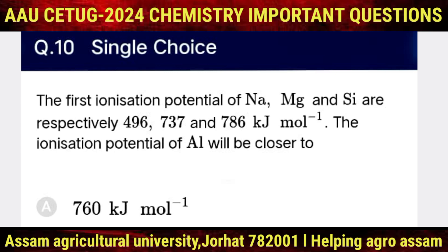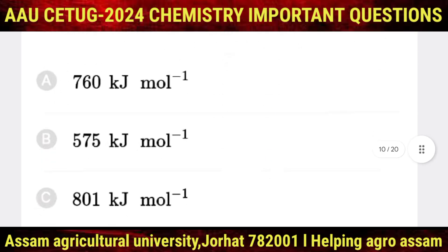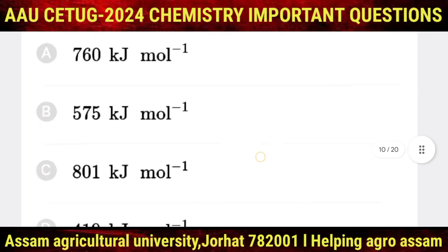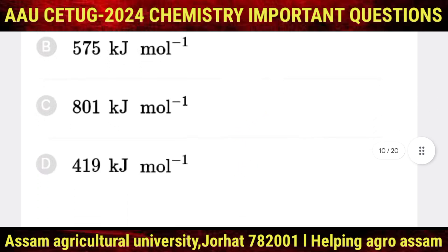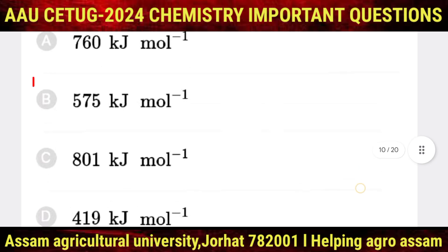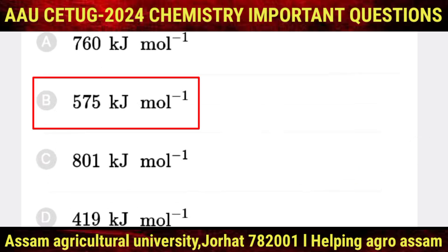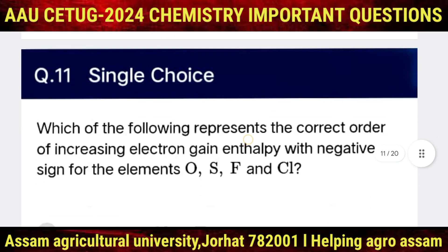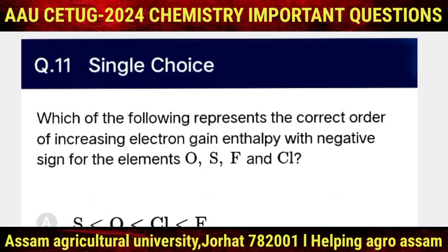Question number 10: the first ionization potentials of sodium, magnesium, and silicon are respectively 496, 737, and 786 kJ/mol. The ionization potential of aluminium will be closer to — options are 760, 575, 801, and 419 kJ/mol. After calculating, the answer is option B, that is 575 kJ/mol.